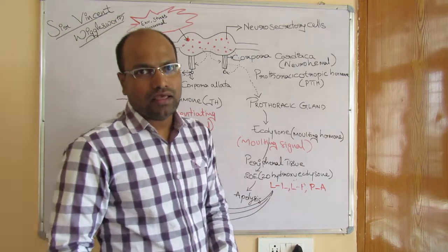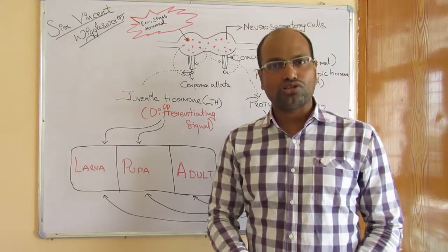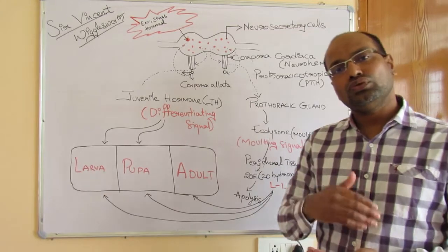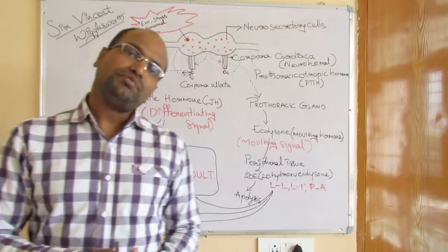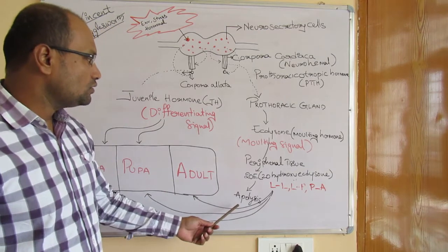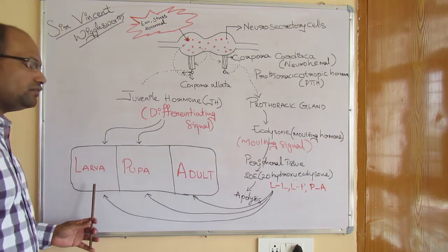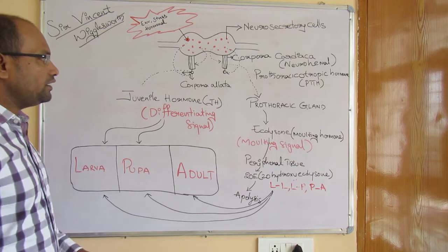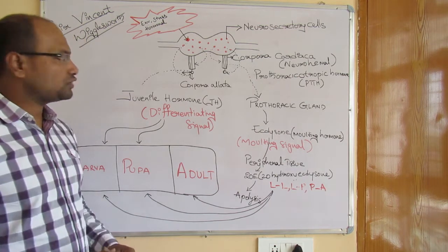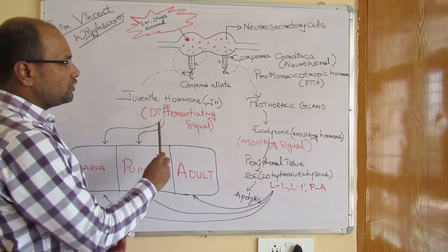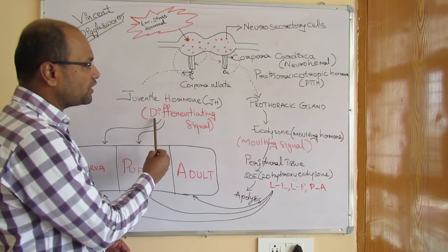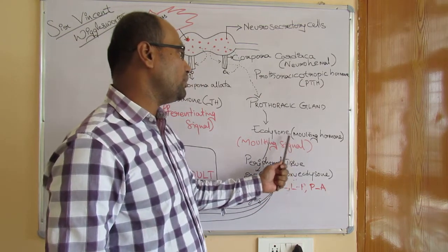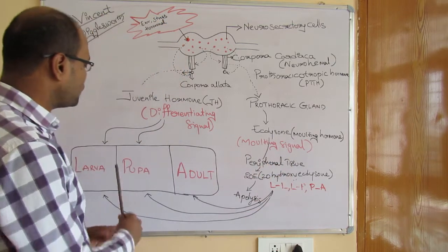One important function of 20-hydroxy ecdysone is that it works through a process called apolysis, where the cuticle present in arthropod organisms is replaced by a new cuticle. This process helps in molting — the larval cuticle converts into a pupal cuticle, and subsequently to the adult cuticle. The signals associated with juvenile hormone are called differentiating signals, while signals from ecdysone are called molting signals.